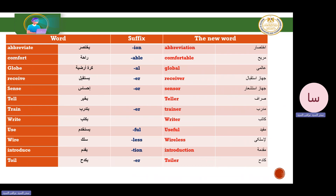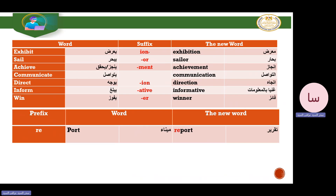More word formations: exhibit (verb/noun) + -ion = exhibition (a place). Sail + -or = sailor. Achieve + -ment = achievement. Communicate + -ion = communication. Direct + -ion = direction. Inform + -ative = informative. Win + -er = winner. The prefix 're-' means 'again' — for example, added to 'port' it becomes 'report.'